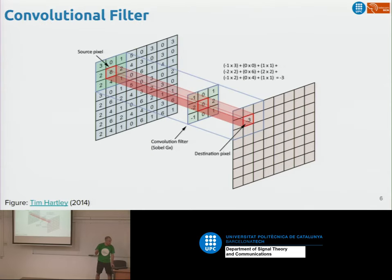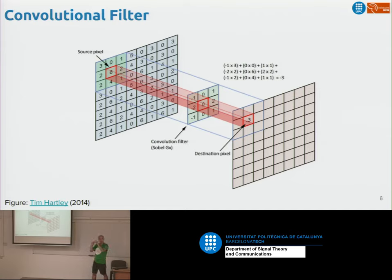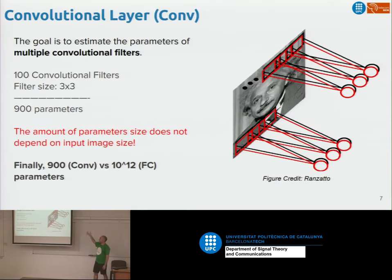The trick is that instead of using perceptrons connected to every possible pixel, we use another type of structure called a convolutional filter. A convolutional filter is local — we don't connect our neuron to all possible pixels of the input, but just to a very small number of them. We then scan this filter over the image at many different locations, reusing the parameters we learned for that filter at multiple locations. That's the idea of a convolutional layer.